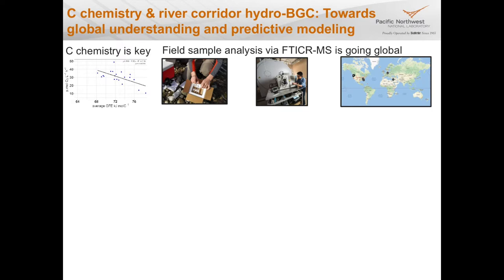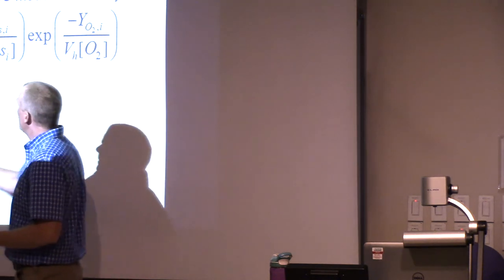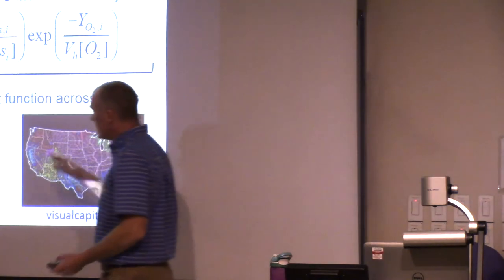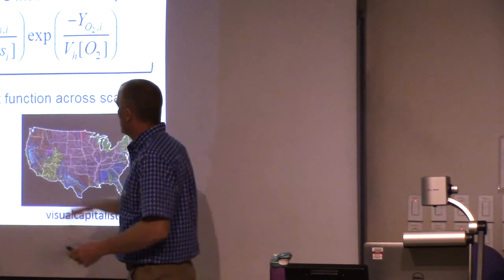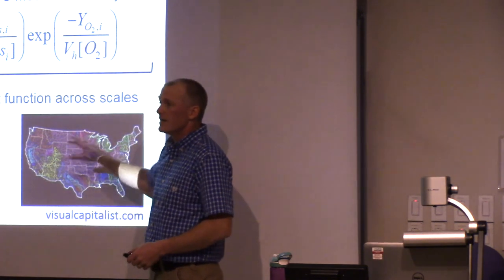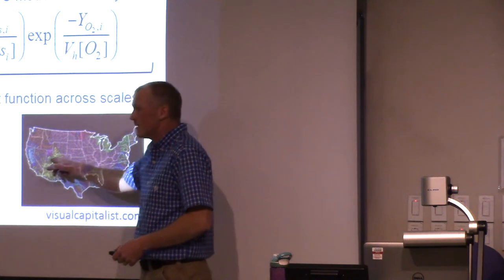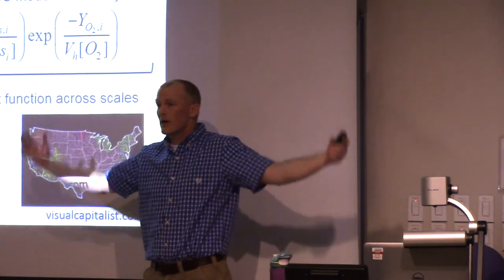Returning to the takeaways: carbon chemistry is really important to the hydrobiogeogeochemistry of river corridors; we're going global by coupling molecular analysis with sensor technology and putting that information directly into models; and the goal is to go from detailed fundamental understanding through FT-ICR analysis into equations that can be embedded in hydrologic models at field scale — hundreds of meters to hundreds of kilometers — enabling mechanistic watershed modeling and ultimately scaling to continental and global scales.